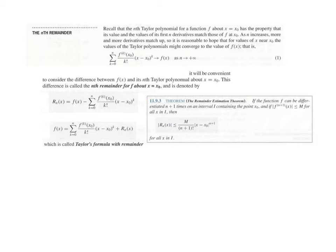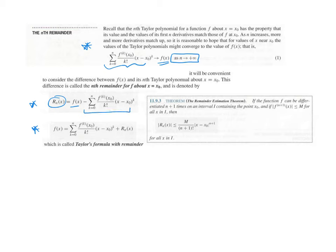Section 11.9 deals with the nth remainder for Taylor series for a function about the point x equals x sub zero. This is a quick introduction to what the nth remainder is all about. It shows that as the number of terms approaches infinity, the series approximation for any function approaches that function itself. That makes sense, recalling our constant referral to Taylor and Maclaurin polynomials as infinitieth degree polynomials. These definitions express that the remainder equals the function minus the series approximation, or equivalently, the function equals the series approximation plus the remainder.